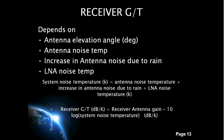Receiver G/T depends upon the antenna elevation angle, antenna noise temperature, increase in antenna noise due to rain, and LNA noise temperature. The antenna elevation angle affects the antenna noise temperature; antenna noise temperature decreases with an increase in elevation angle. Antenna noise temperature is the sum of all noise sources at the antenna, and the antenna system noise temperature is the sum of all noise temperatures at the receiving antenna. After obtaining the required parameters, the formulas shown here are used for the final calculation of G/T.